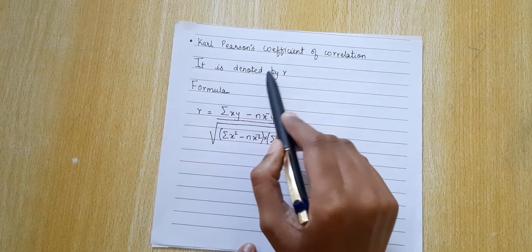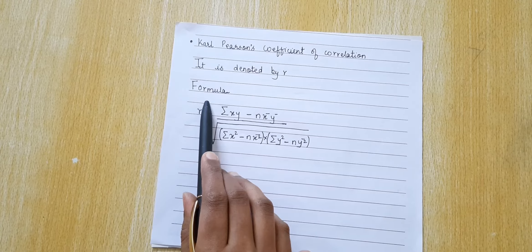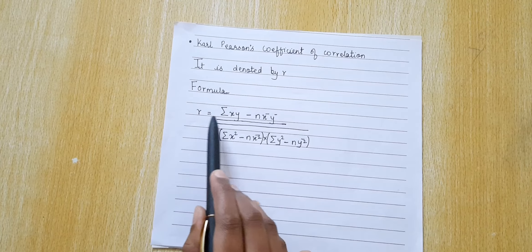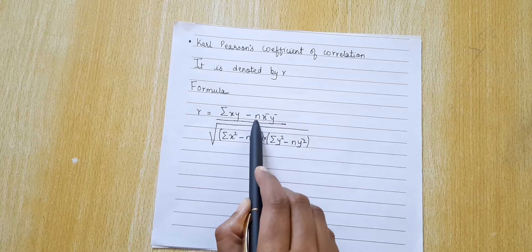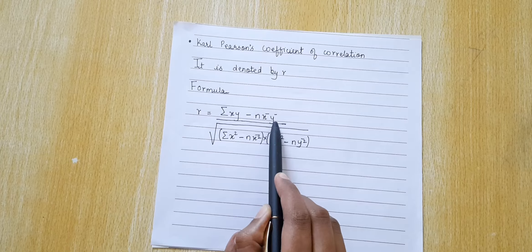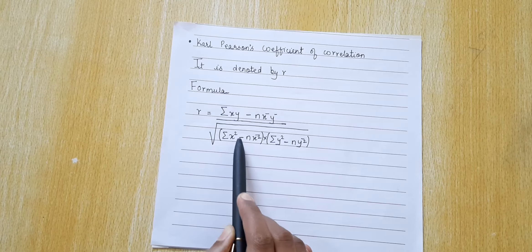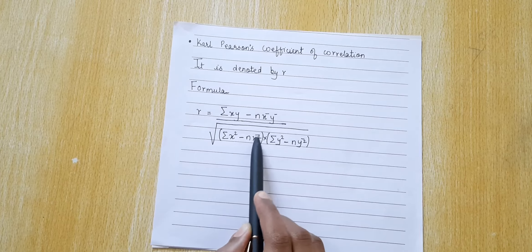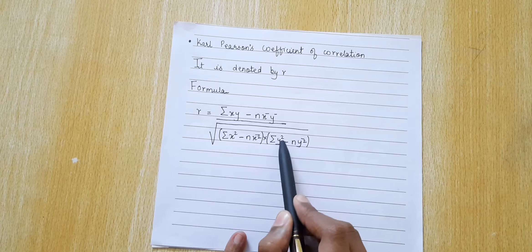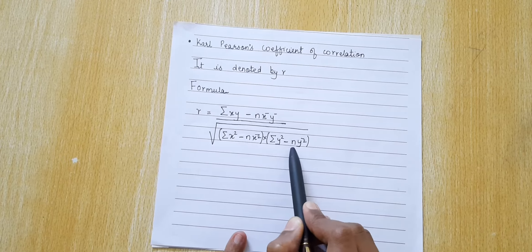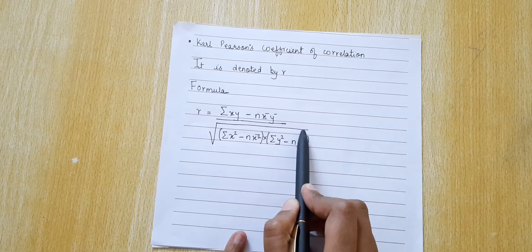Basically Karl Pearson is denoted by r. The formula to calculate Karl Pearson: r equals sum of xy minus n times x-bar times y-bar, divided by the square root of the bracket sum of x-squared minus n times x-bar squared, multiplied by the bracket sum of y-squared minus n times y-bar squared.